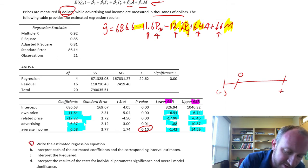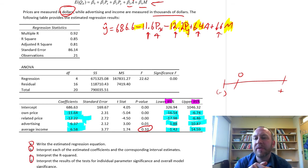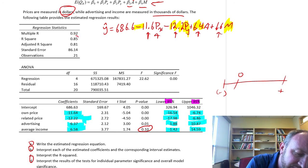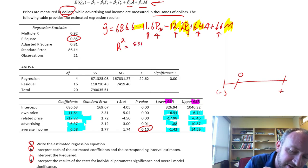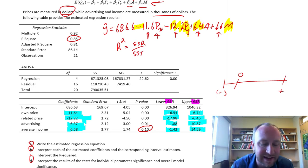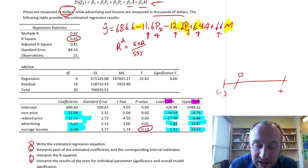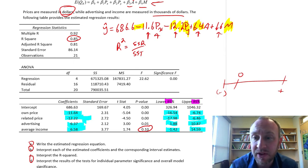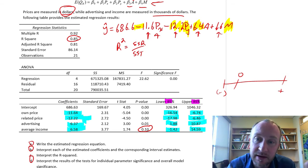Now, interpret the R-squared. Our R-squared is 0.85, meaning our regression has captured 85% of the total variation in quantity demanded. To elaborate: own price, price of the related product, advertising expenditure, and income together explain 85% of the total variation in quantity demanded.